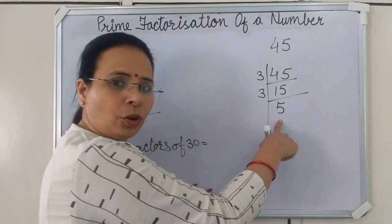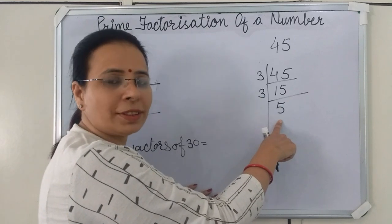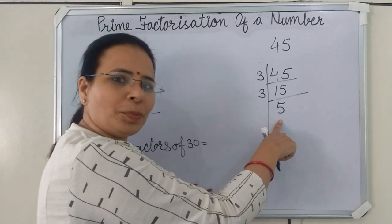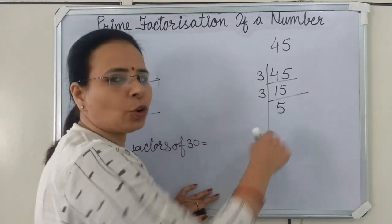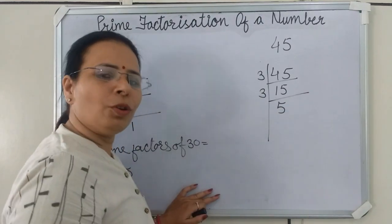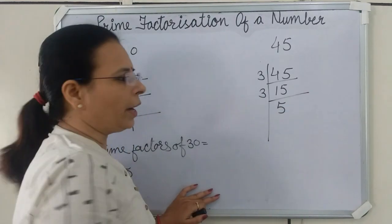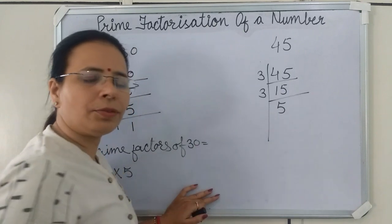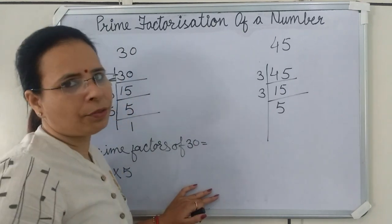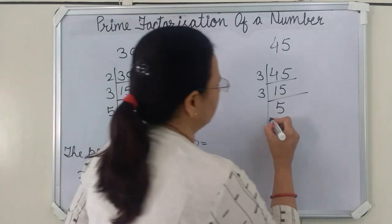As you know, 5 is a prime number. So what we will do? We will divide 5 by 5 itself.